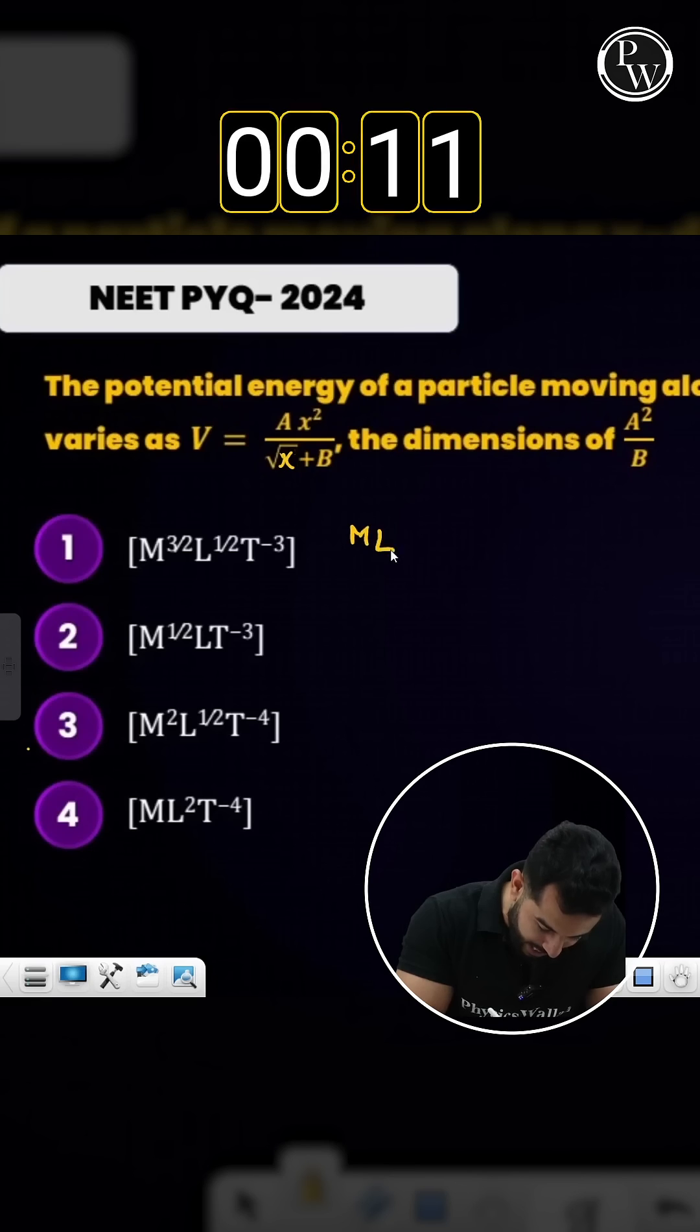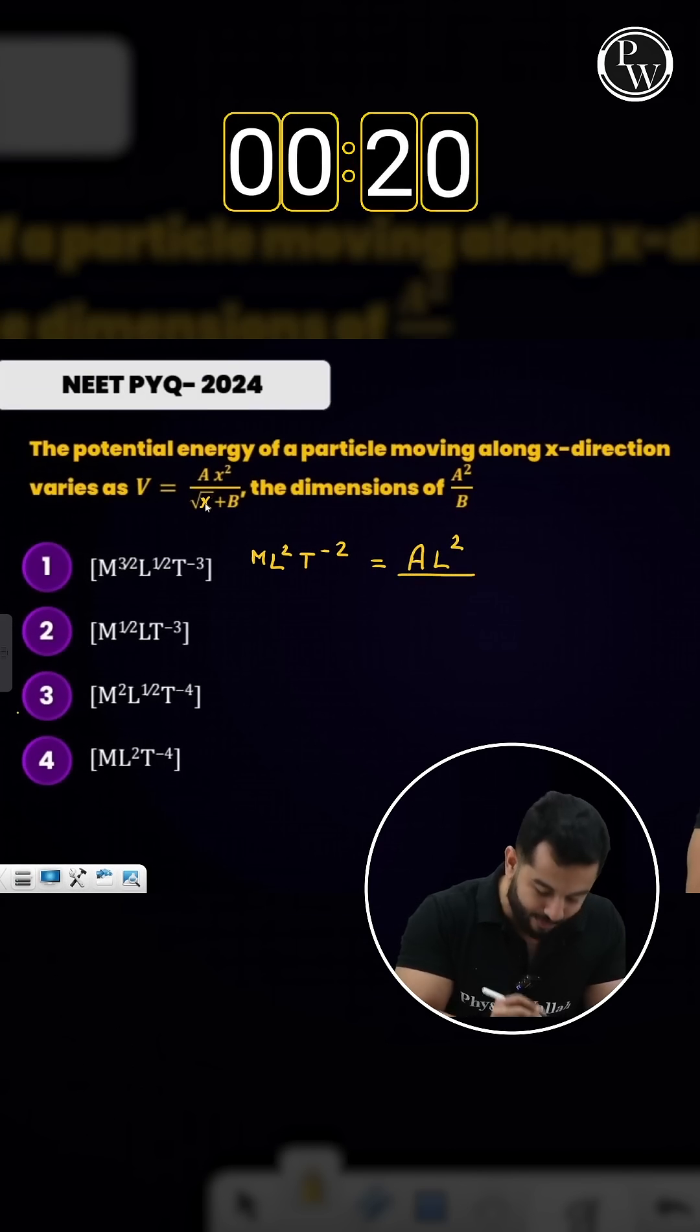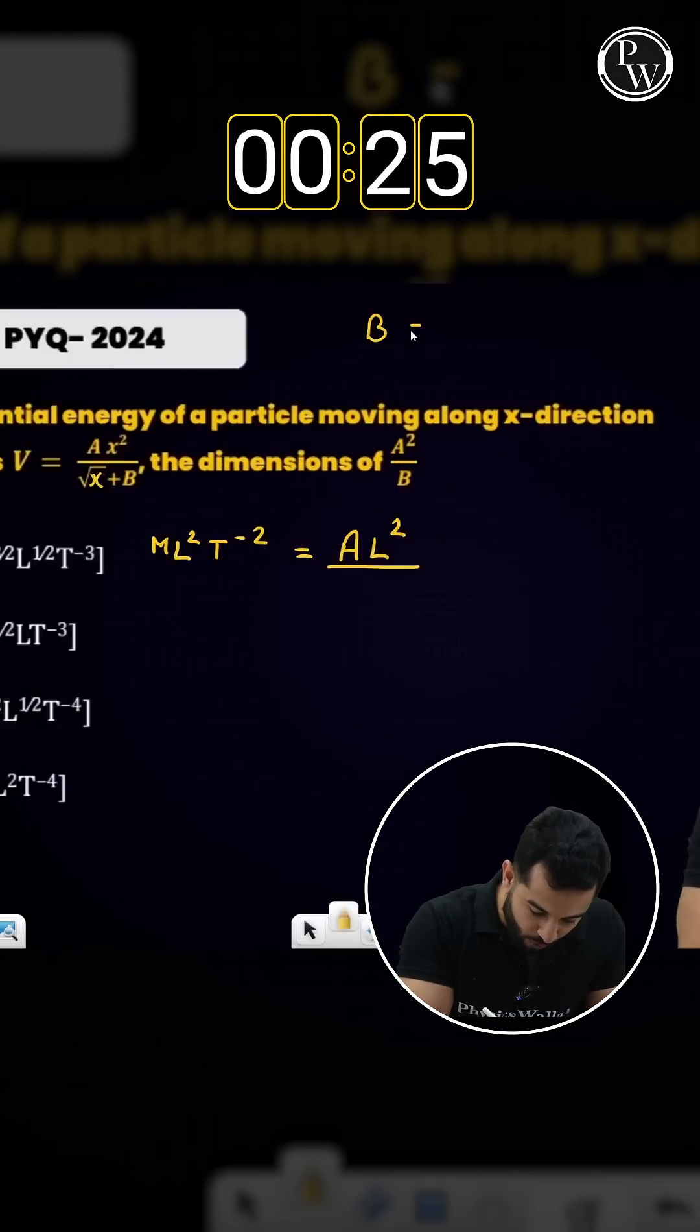Now we know that the dimensional formula of potential energy is nothing but ML² T⁻². And for a, we don't know right now. Dimensional formula: a x squared will be L² divided by root x plus b.